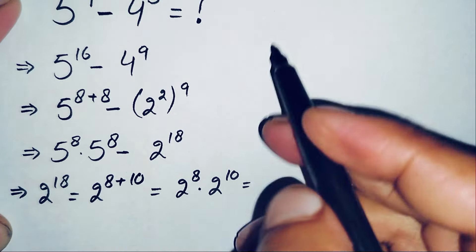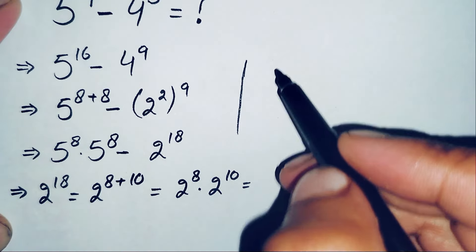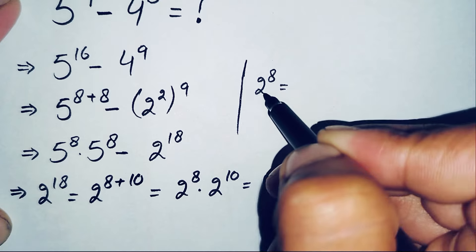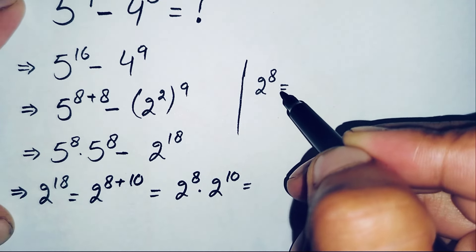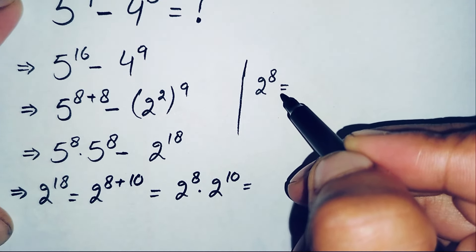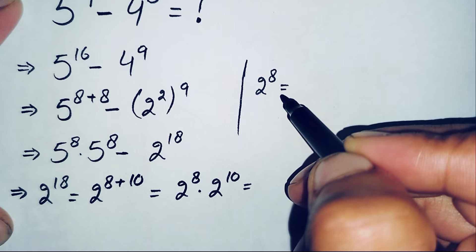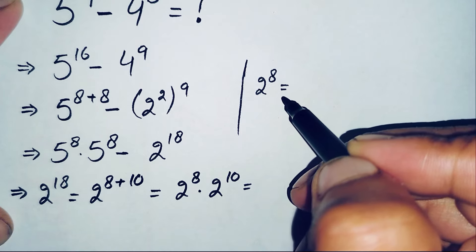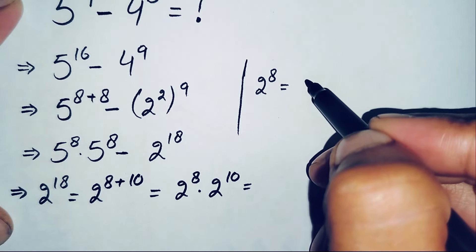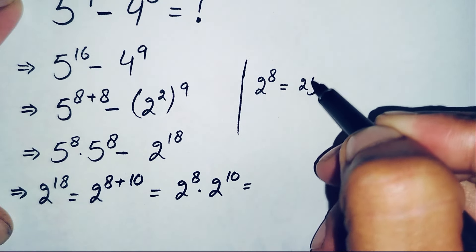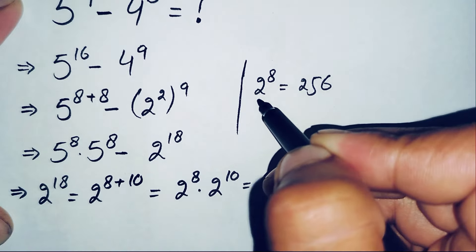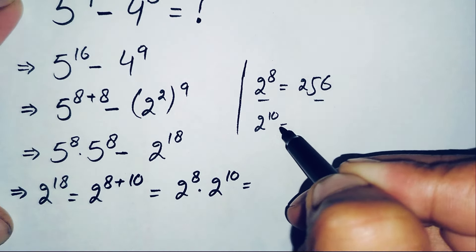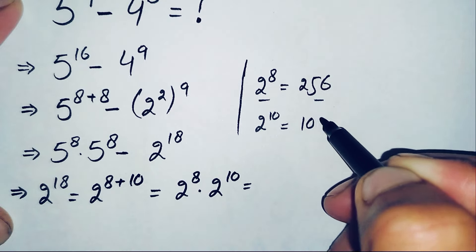What is the value of 2 raised to power 8? We multiply 2 by itself 8 times: 2×2=4, 4×2=8, 8×2=16, 16×2=32, 32×2=64, 64×2=128, and 128×2=256. So the value of 2 raised to power 8 is 256.